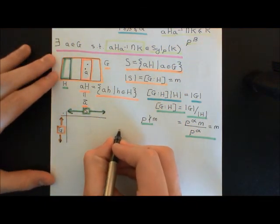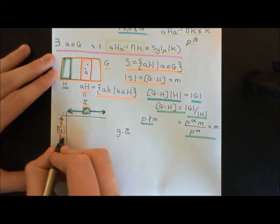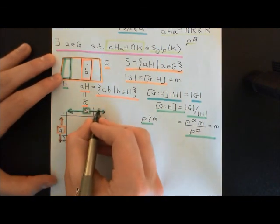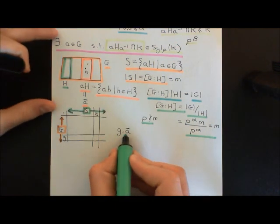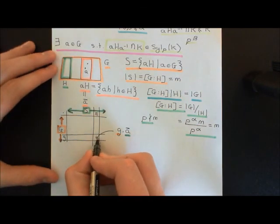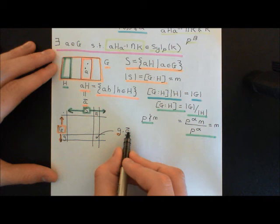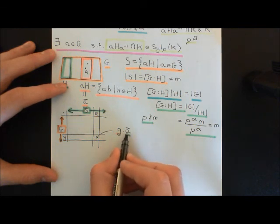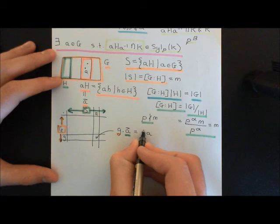The way I'm going to define this group action is: little g acting on some left coset ā gives the left coset containing ga. So here is the row for element g and the column for coset ā — the entry is g acting on ā, which takes this left coset of H containing element a onto the coset obtained after multiplying all elements of that coset by g.